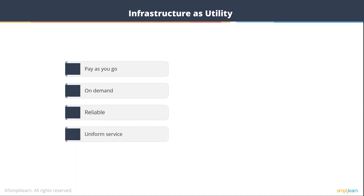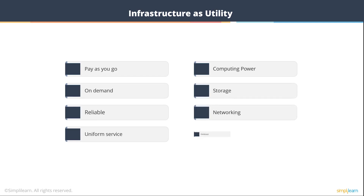They brought about a paradigm shift in the world of infrastructure as a service. Now you can have infrastructure and pay as you go. You can use only what you want, and you don't have to worry about reliability or uniformity. Somebody with one server versus somebody with a thousand servers in the cloud would get the same reliability, same service across all regions, with the same computing power, storage, networking, and database, irrespective of size, scale, and region.